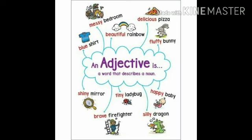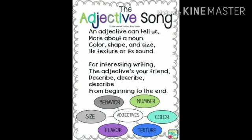Now we are going to learn about Adjectives. Adjectives are describing words which describe a noun or a pronoun. Different types of adjectives include, for example: tall, short, long, fat, thin. We can learn adjectives with this adjective song: an adjective can tell us more about a noun — color, shape, and size, its texture and its sound. To make our creative writing more lively and more vivid, we should use proper adjectives to describe anything.